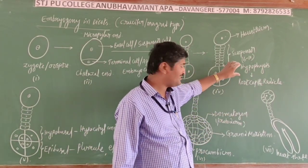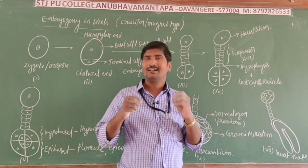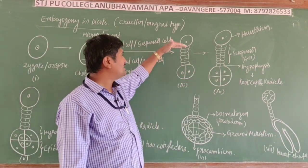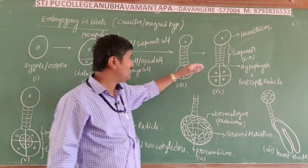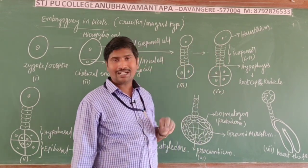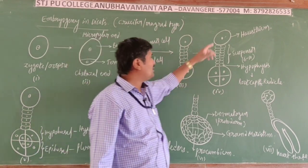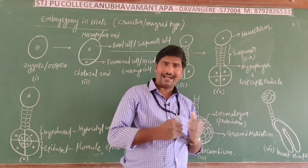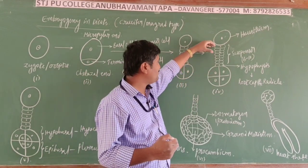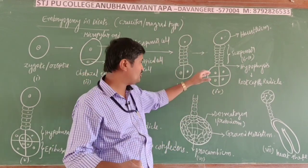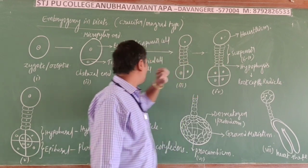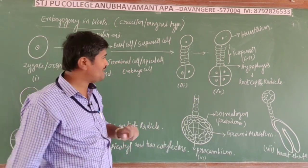The hypophysis gives rise to the root cap and radicle. The terminal cell undergoes one longitudinal division followed by two vertical divisions. As a result, the upper tier is called the hypobasal cells and the lower tier is the epibasal cells, forming a total of eight cells — the octant stage.